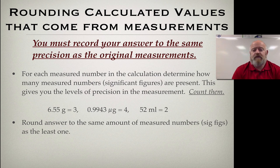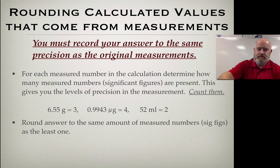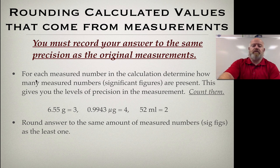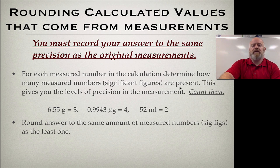If you're measuring to two or three layers of precision, then your answers should also match those two or three layers of precision. The basic rule: record your answers to the same precision as the original measurements. For each number in a calculation, determine how many measured numbers — we call them significant figures — are present. Count them to determine the levels of precision you have.